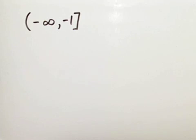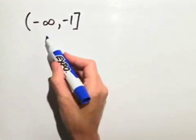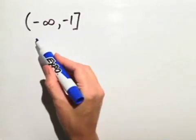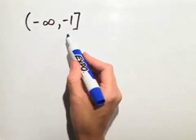We're asked to express this interval in set builder notation and graph the interval on a number line. In this case, we have an infinite interval starting at negative infinity and proceeding until we get to negative 1, including negative 1.